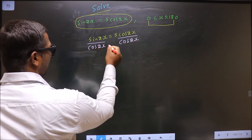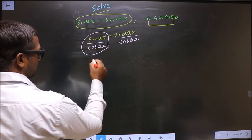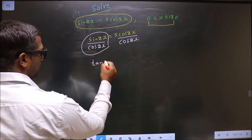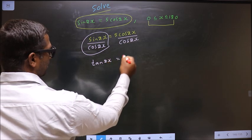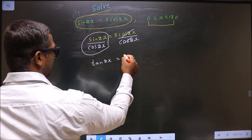Now, when we divide, sin by cos is nothing but tan 2x equal to this cancel out, I get 5.